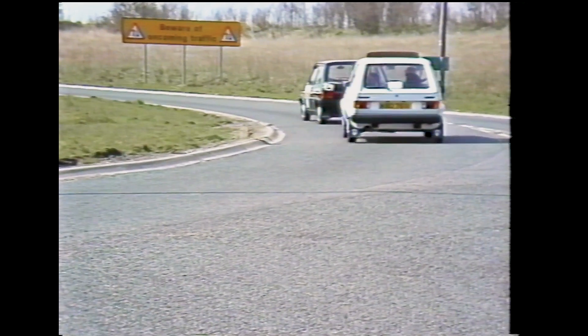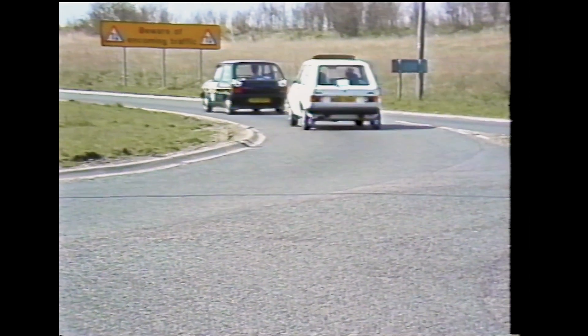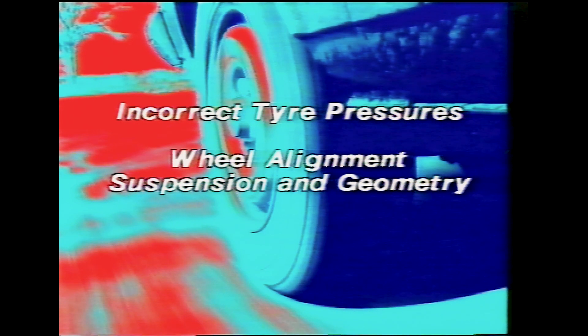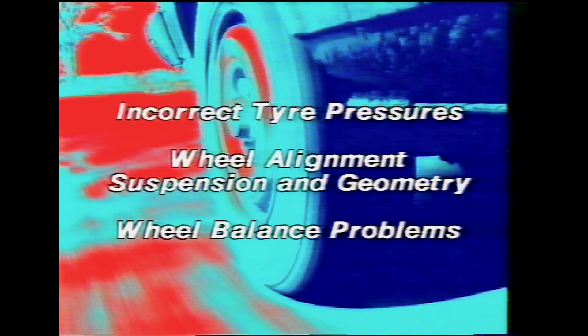Even wear of the tyre is inevitable with use, but unusual tyre wear is an indication that a problem exists, such as incorrect tyre pressures, wheel alignment, track or toe, suspension and geometry problems, camber and caster, or wheel balance problems. Section 1.